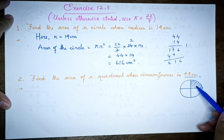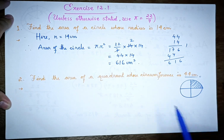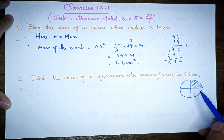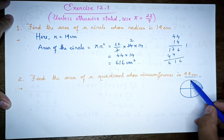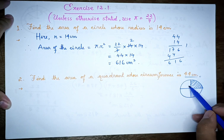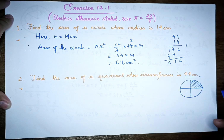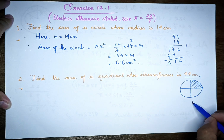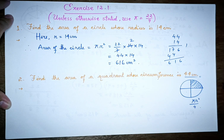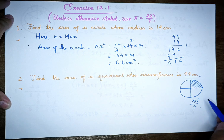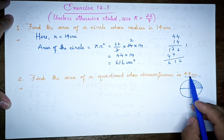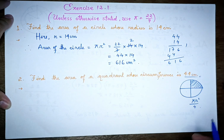The area of a circle is pi r squared. Since a quadrant is one part of the circle, the area of the quadrant is pi r squared divided by 4. The circumference formula is 2 pi r.